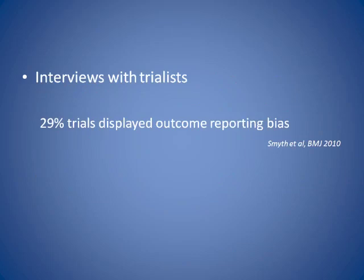Another study by Smith et al. from Liverpool compared protocols of trials with subsequent publications, looking at outcomes presented in protocols versus full publications, then did follow-up telephone interviews with the trialists themselves. In 29% of those trials, there was evidence of outcome reporting bias. Quite often the trialists weren't appreciating the impact it had on the evidence — they weren't trying to mislead, they were just reporting what they felt was of interest.